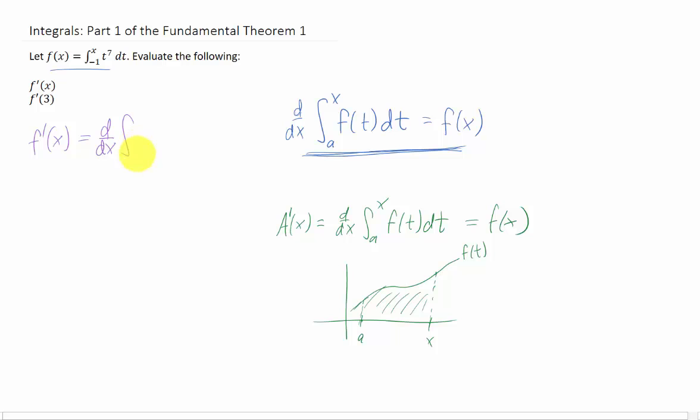Well, f prime just means the derivative of the given function, and that given function happens to be an integral. So we're just taking the derivative of an integral. This negative 1, it doesn't matter what number that is right here. It can be anything. But what we do is we just take that x, and we plug it into the function, and we just get x to the 7th. That is it.